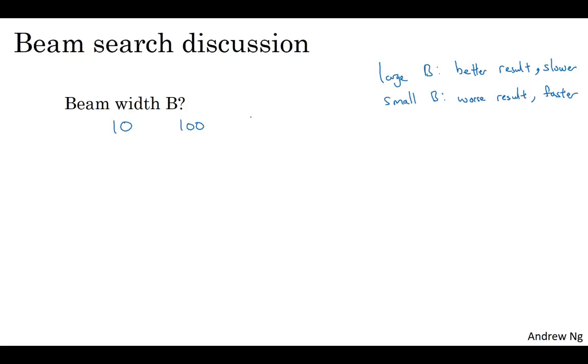But for research systems where people want to squeeze out every last drop of performance in order to publish a paper, the best possible result, it's not uncommon to see people use beam widths of 1000 or 3000. But this is very application as well as domain dependent. So I would say try out a variety of values of B and see what works for your application.